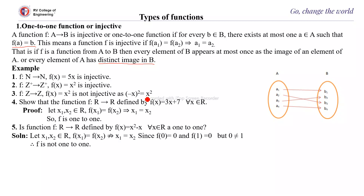Next, f(x) = 3x + 7 over the real numbers: suppose x1, x2 belong to R and f(x1) = f(x2), that is 3x1 + 7 = 3x2 + 7, which implies x1 = x2, therefore f is one-to-one. For the function f(x) = x² − x on real numbers, f(0) = 0 and f(1) = 0, but 0 ≠ 1, so both 0 and 1 have the same image and it is not one-to-one.